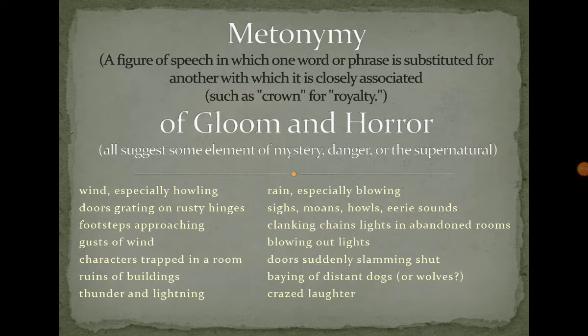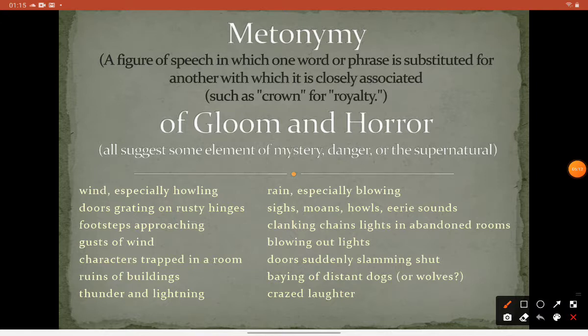In gothic literature, you will find metonymy — a word or phrase substituted for another with which it's closely associated, like 'crown' for royalty or coronation. Gloom and horror are the prominent characteristics of any gothic literature story. The atmosphere of the stories you will study, like 'A Rose for Emily,' reflects these features.